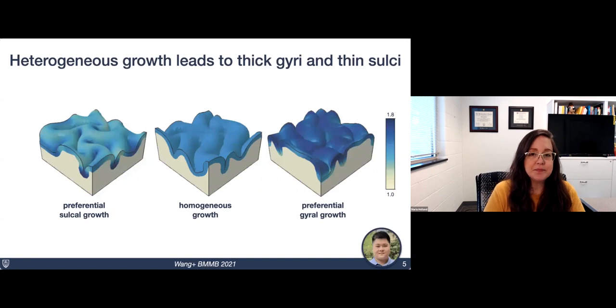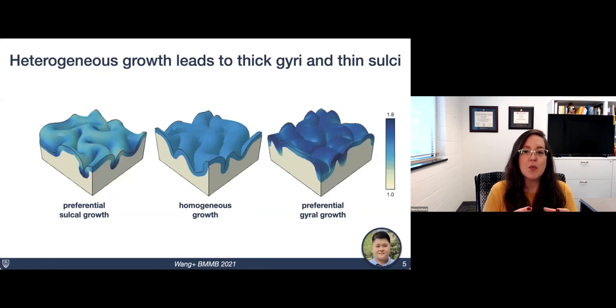More recently, in a paper published in my lab with Sholun Wang, who's actually one of the authors of this presentation, we showed that heterogeneous growth in the cortex actually also contributes to this pattern of thick gyrae and thin sulci. In this paper, we explored the effect of heterogeneous growth throughout the cortex with a special case of homogeneous growth, or we had the ability to make sulci, those valleys grow faster, or gyri, those mountain peaks grow faster.